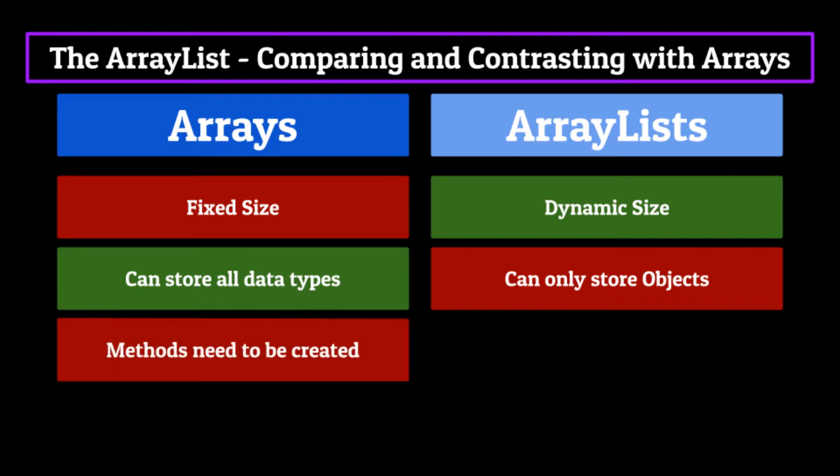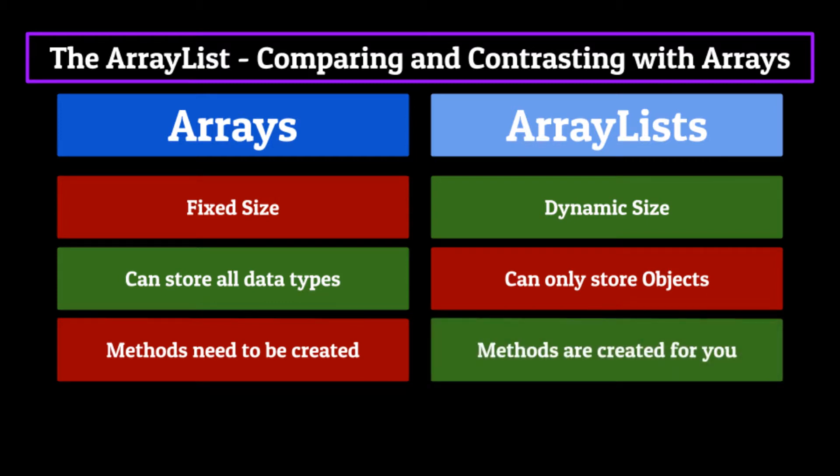Moving on, an Array is built into most languages, meaning it doesn't have any methods for you to interact or modify it, whereas an ArrayList is a class, meaning it comes with useful methods to help you utilize it, many of which we talked about today.